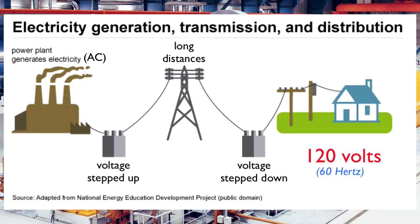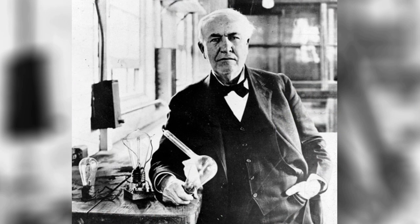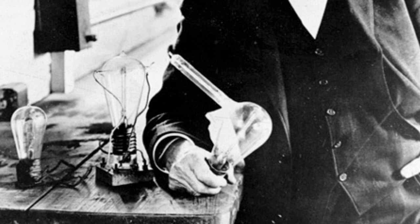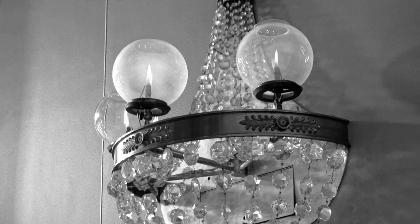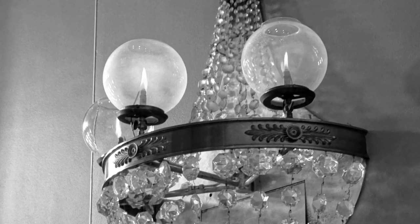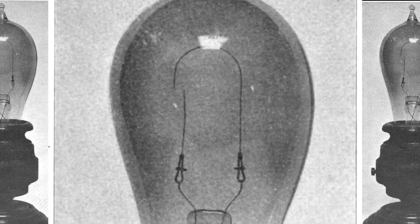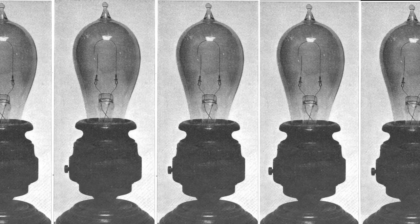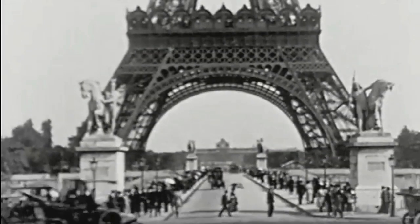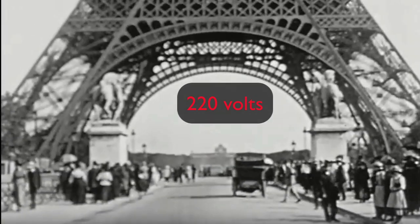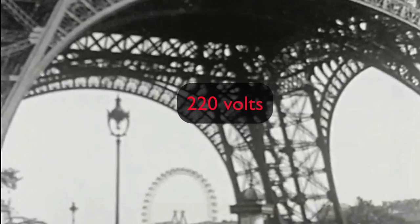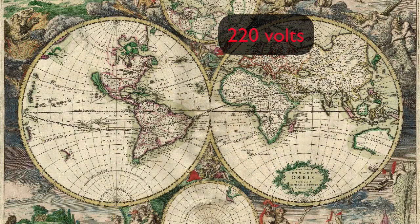Why 120 volts? Legend has it that early light bulbs operating at around this voltage glowed as brightly as conventional gas lamps. Also, at higher voltages, those early light bulbs would quickly burn out. That's why early power plants aimed for around 120 volts, which set 120 volts as the North American standard. By the time electricity became popular in Europe, light bulbs could withstand the higher yet more efficient 220 volts, which is why 220 volts evolved into the European standard.